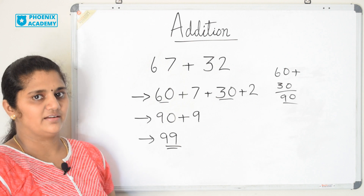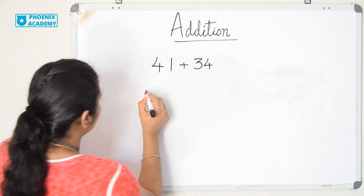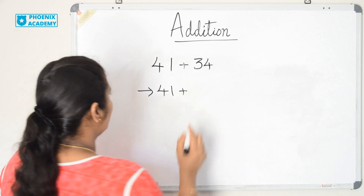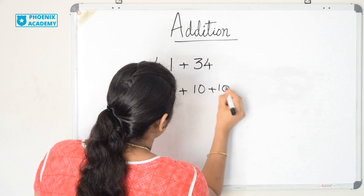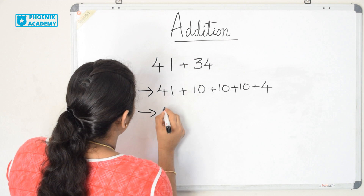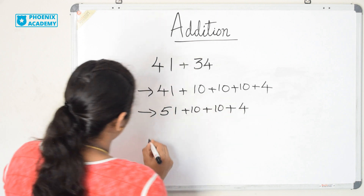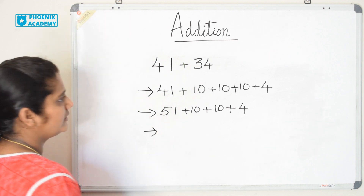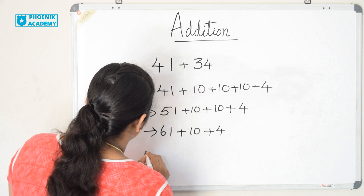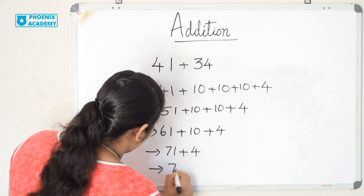So the answer is 99. Now we can add 41 plus 34 by counting in tens. We write 41 as it is. 34 is 3 tens and 4 ones, so we write 10 plus 10 plus 10 plus 4. 41 plus 10 is 51, plus 10 is 61, plus 10 is 71, plus 4 is 75.